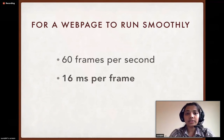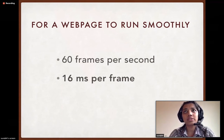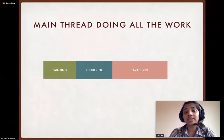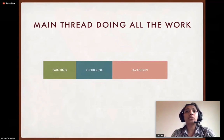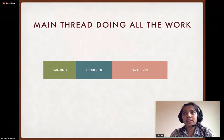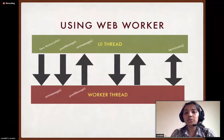For a web page to run smoothly, there should be 60 frames per second. If we do simple math, we get that for every frame we have only 16 milliseconds, which is not a lot of time. In those 16 milliseconds, your single thread has to handle painting and rendering of UI as well as executing JavaScript. So if your JavaScript has several for loops or complicated logic, the thread is busy and your UI gets compromised. JavaScript gives you a solution for that — web workers.